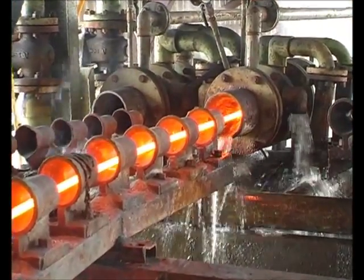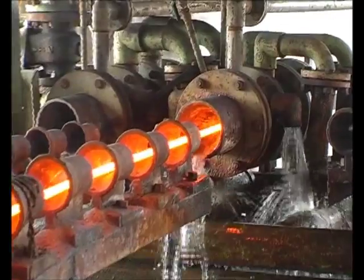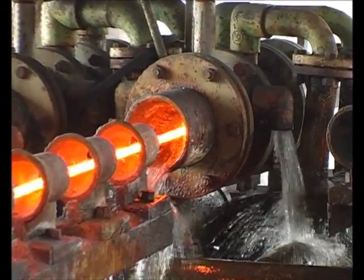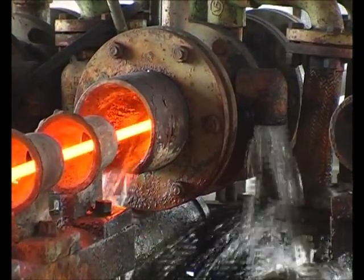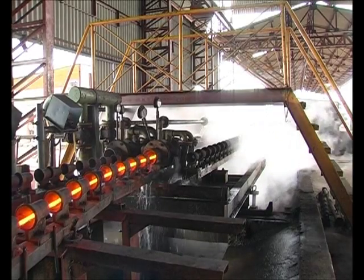The proprietary Thermex quenching system is placed after the last rolling mill stand. On completion of rolling, bar temperature is around 1,000 degrees centigrade.